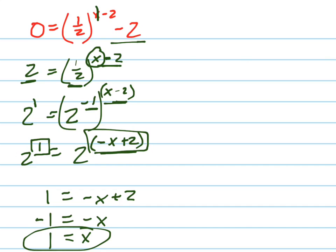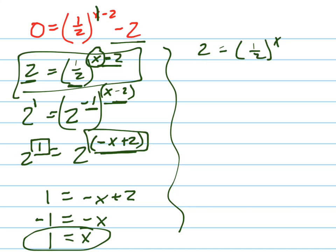The other way you could have done it if you had a calculator, and this would work also. So here's the alternate way of doing it. When you got to this point right here, you could have, so let me write it out again, 2 equals 1 half to the x minus 2.